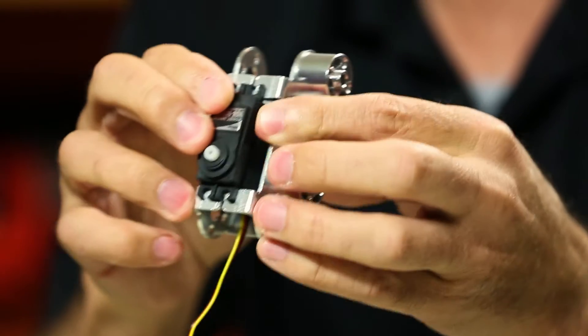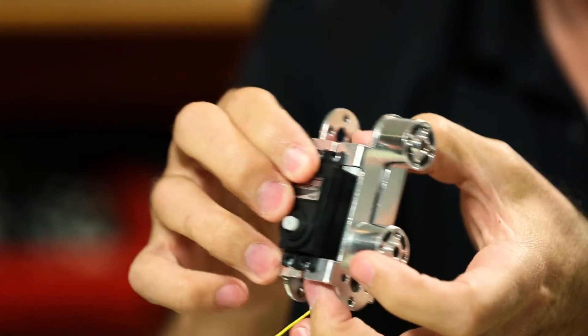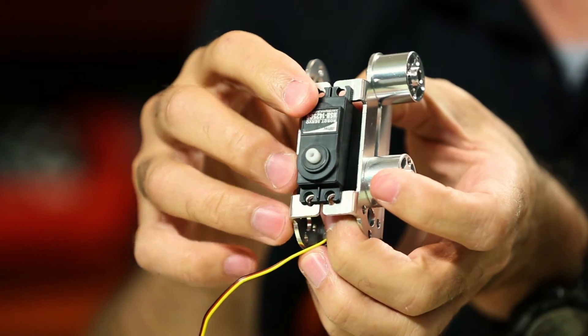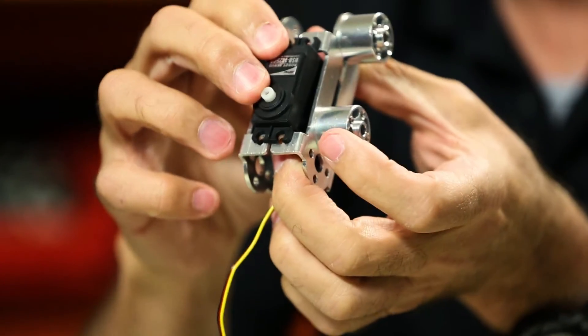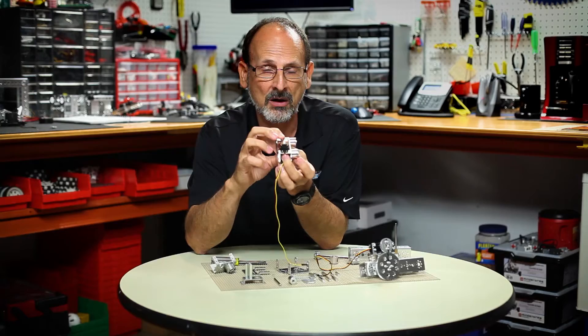And again I have the same spacing options with my threaded spacer so that I keep my gear alignment, and the advantage of this is that this particular bracket is going to help reduce flex of the servo.